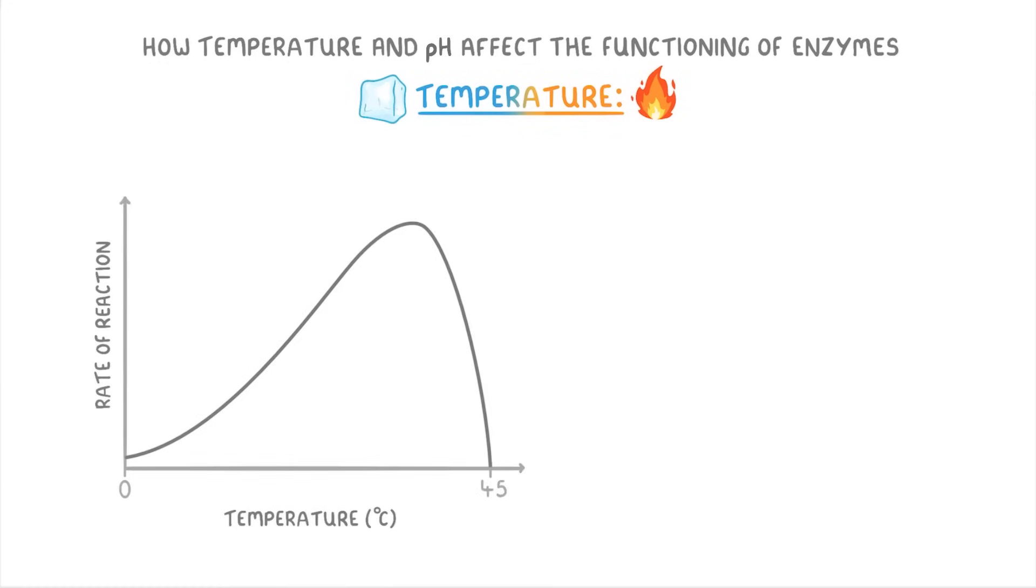This graph here shows how the rate of an enzyme-controlled reaction changes with temperature. As you can see, for the first part of the curve, as the temperature increases, so does the rate of reaction, and this is because all of the particles will have more kinetic energy, and so they're more likely to collide and have enough energy to react.